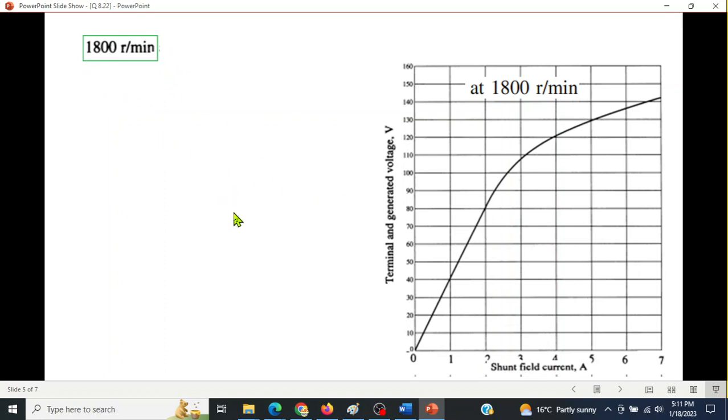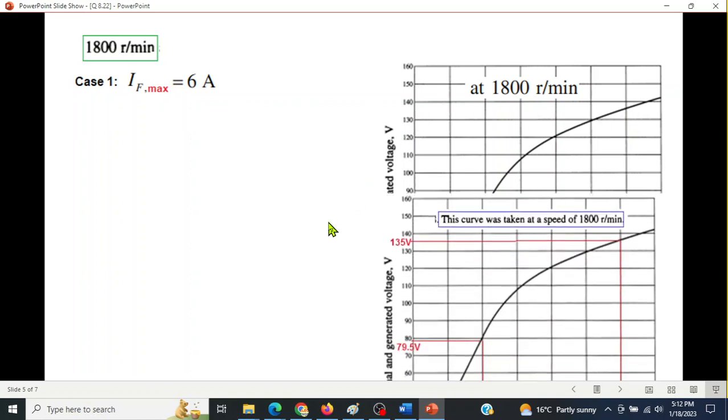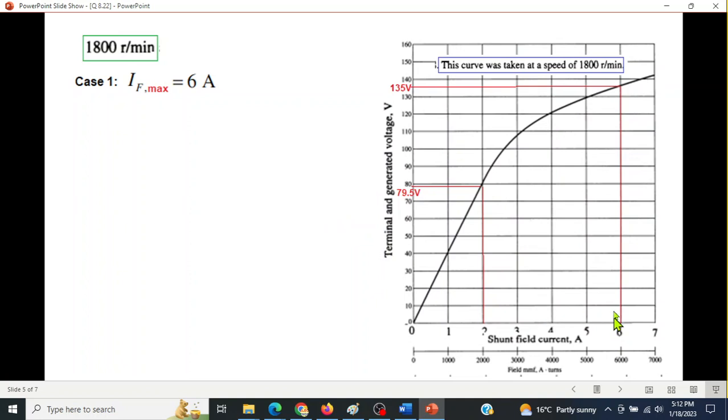Keep that point in mind. Now for IF 6 ampere, we will use this graph to find the Ea or the graphical Ea, we can say Ea0. So for 6 ampere, Ea0 is 135 volt. So Ea0 is 135 volt at 1800 revolutions per minute.